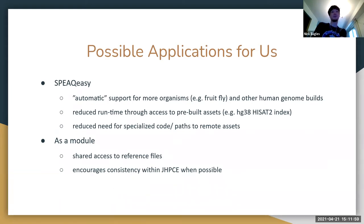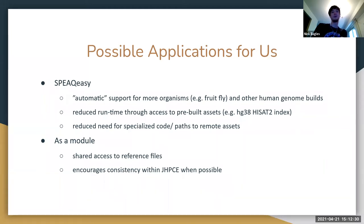One of the biggest benefits for Speakeasy would be taking out a lot of code. As it stands, we have a lot of hard-coded paths to FTP sites for getting particular genome builds, and there's also specialized code to build the HiSAT index, Kallisto index, and Salmon index. RefGenie would be able to simplify that quite a bit, potentially.